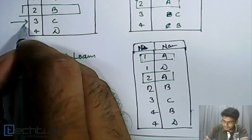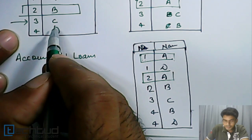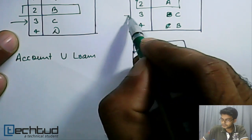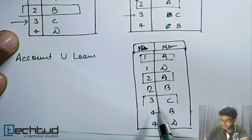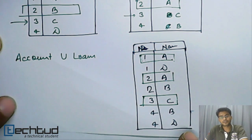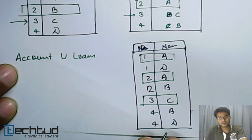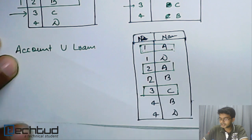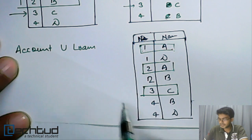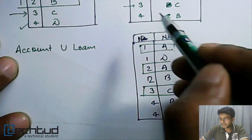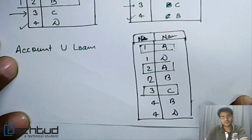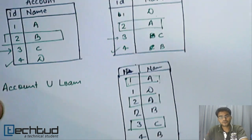If we look here, we have 3 C in both tables. We will keep it only once, 3 C, because in a set elements cannot repeat. We will write only once ID 3 and name C. Similarly, we will have 4 D and 4 B. This is union operation over a relation.